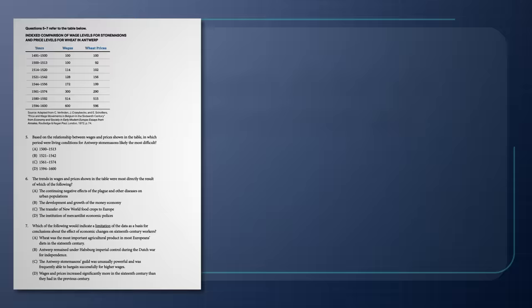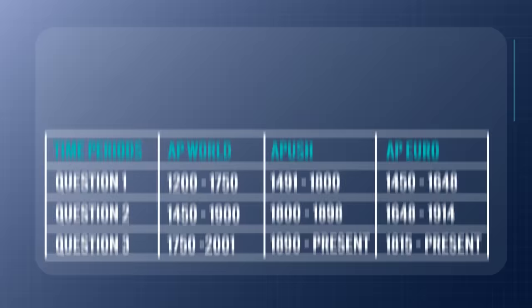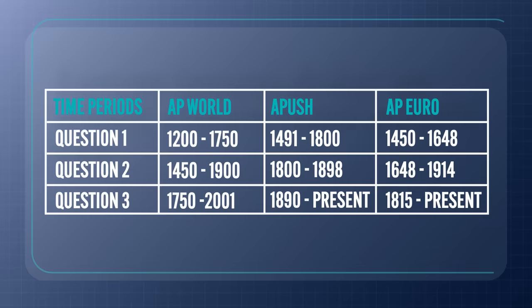The LEQ is the last thing you'll have to do on your exam, and you're going to have 40 minutes to write it. You will have already passed through the multiple choice, the short answer questions, and the DBQ. The College Board tells you ahead of time from which periods they're going to be pulling these questions — it's right there in their course and exam descriptions. They give you three options and you only have to write one, so make sure you choose the one you know the most about.